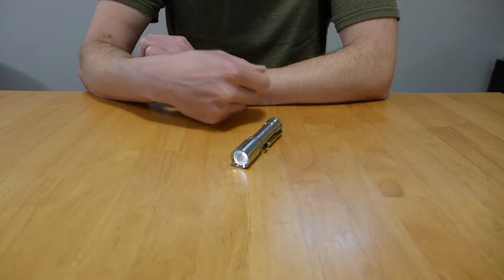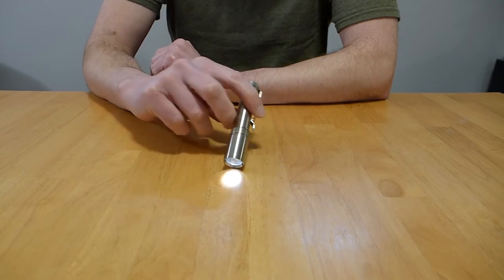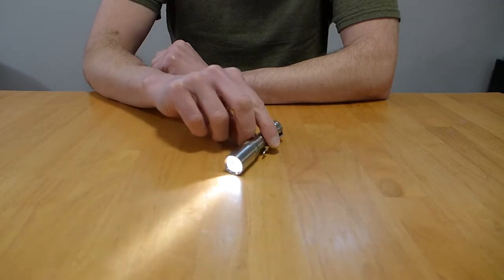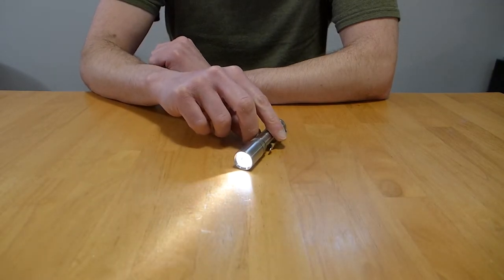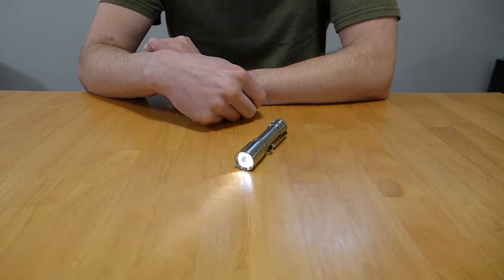So this is programming menu two. You saw the two flashes there to indicate the second programming menu. It's showing the stored brightness for output level one. This is the stored brightness for output level two. Not interested in changing this one, so I'm just going to leave it.